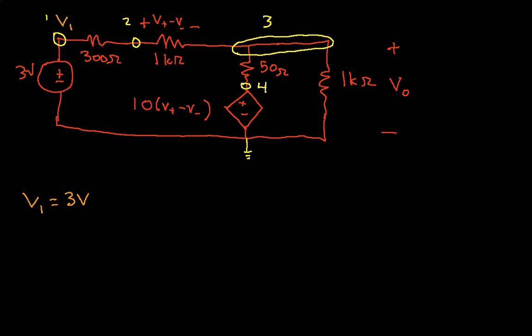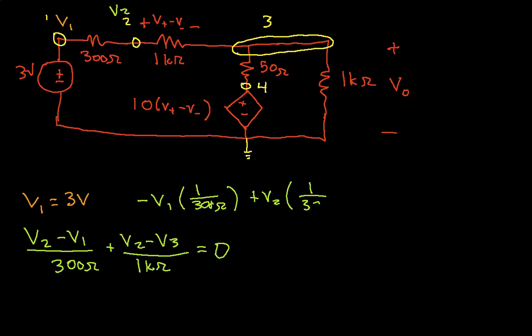Let's look at node 2. We have then that V2 minus V1 over 300 ohms plus V2 minus V3 over 1k ohm is equal to 0. And we can then simplify this as minus V1 times 1 over 300 ohms plus V2 times 1 over 300 ohms plus 1 over 1k ohm minus V3 times 1 over 1k ohm is equal to 0. So that's our second equation.